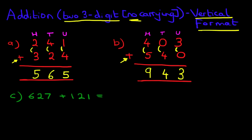It's written like this: 627 plus 121. And what you've been told is that you have to write this in the vertical format to answer the question. So let's do this over here.